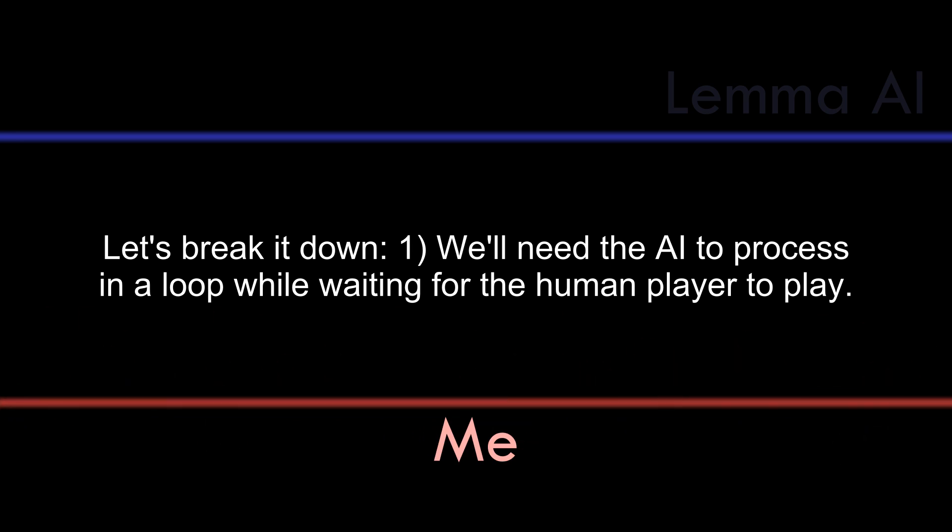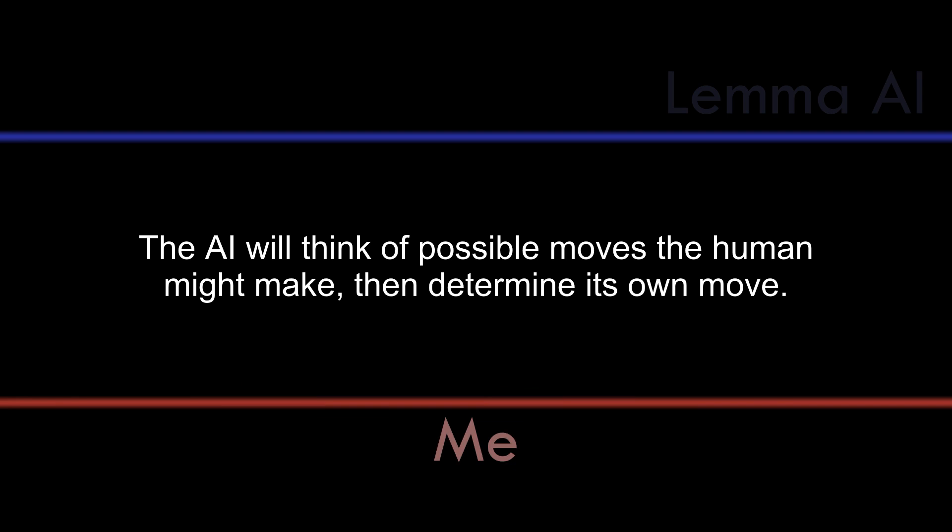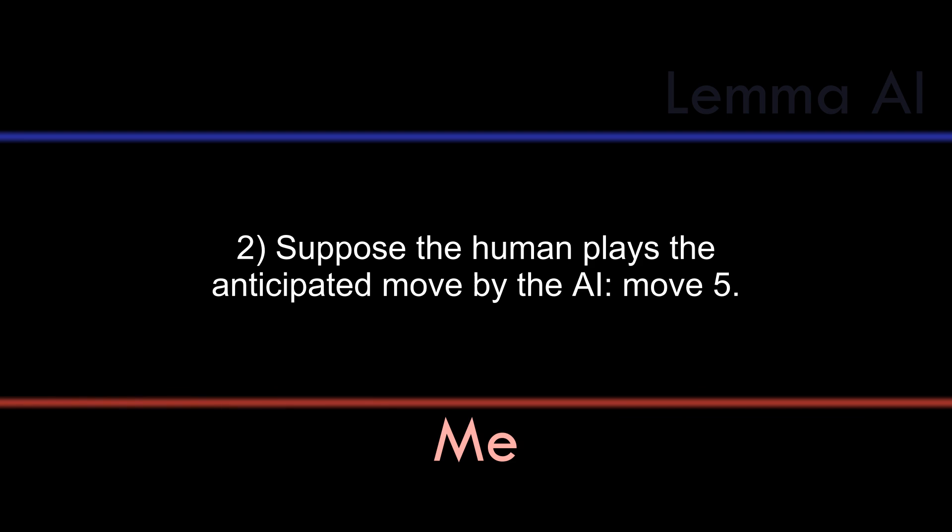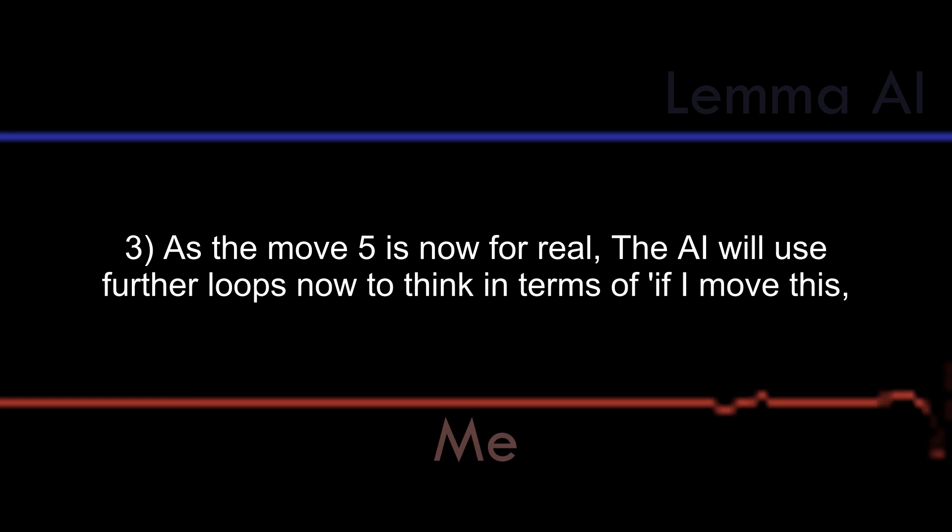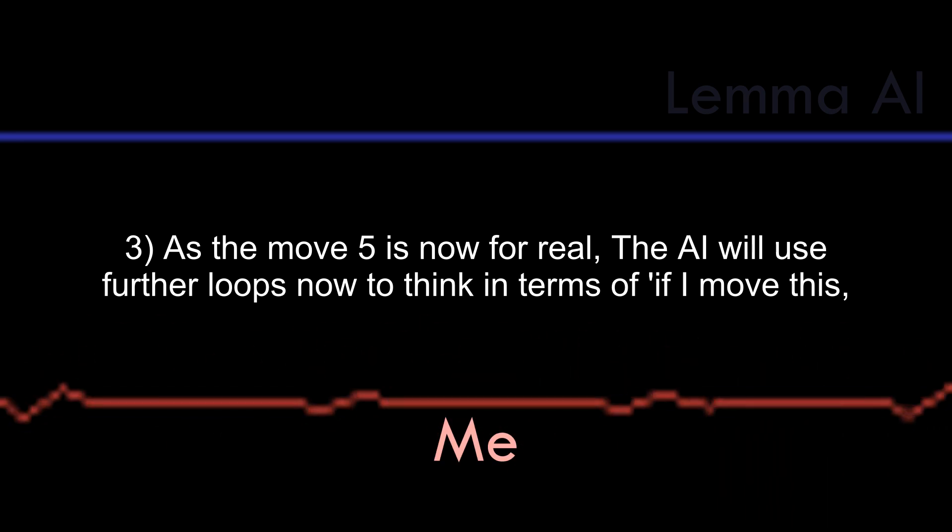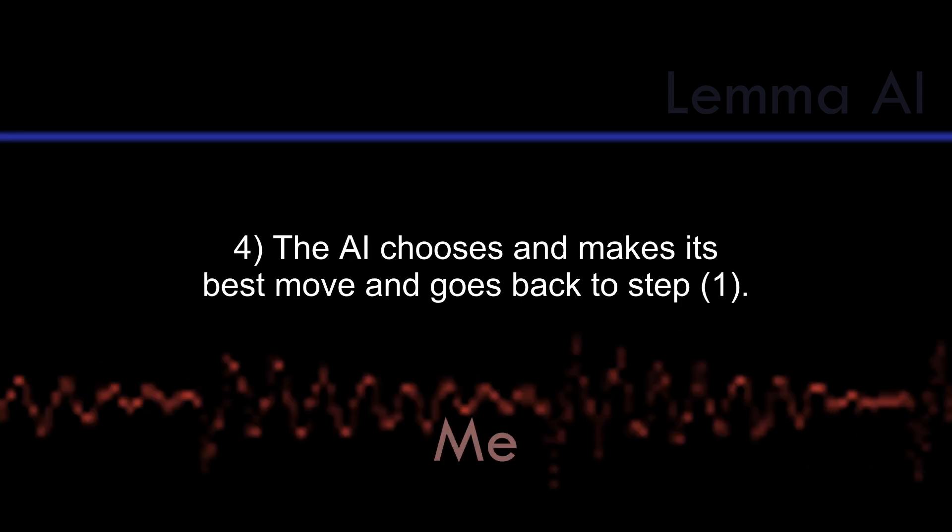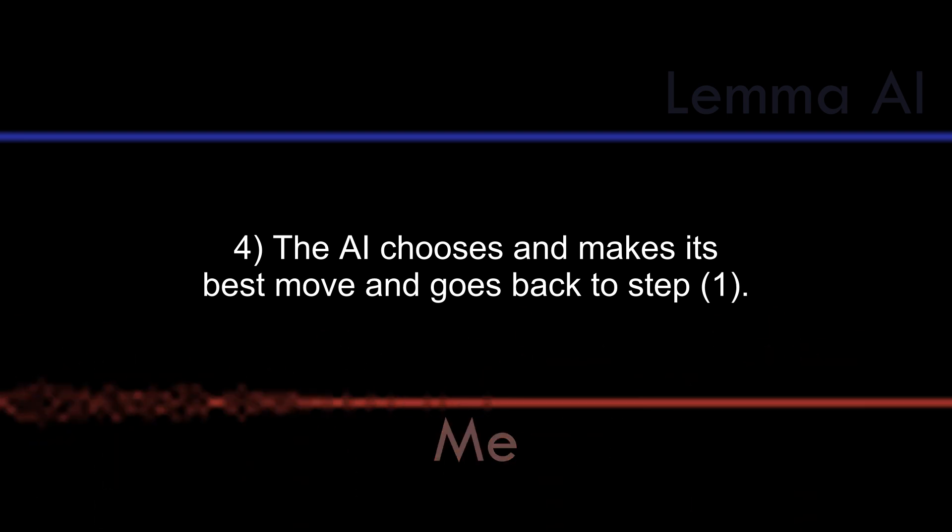Let's break it down. One will need the AI to process in a loop while waiting for the human player to play. The AI will think of possible moves the human might make, then determine its own move. Two, suppose the human plays the anticipated move by the AI, move five. Three, as the move five is now for real, the AI will use further loops now to think in terms of if I move this, then the human will move that. Four, the AI chooses and makes its best move and goes back to step one.